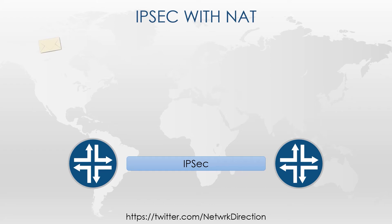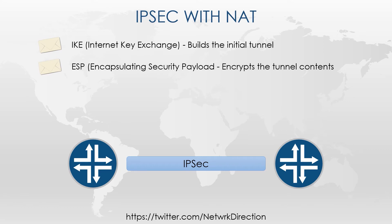At a high level, IPsec uses IKE, or Internet Key Exchange, to build the initial security tunnel. When the tunnel has been built, IPsec uses ESP, or Encapsulating Security Payload, to encrypt the contents of the traffic in the tunnel.